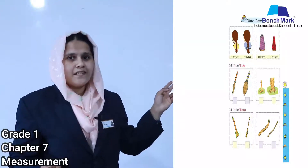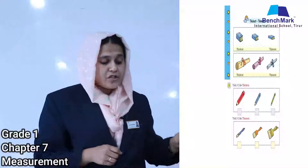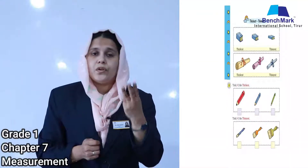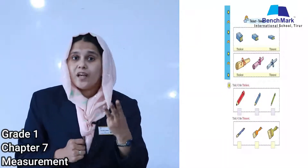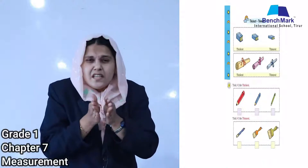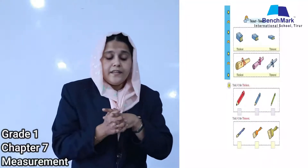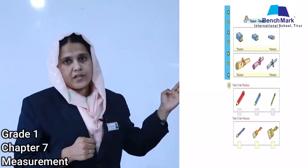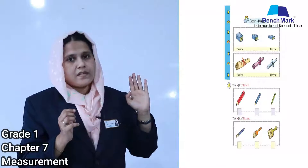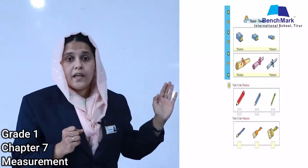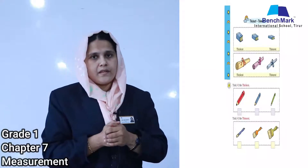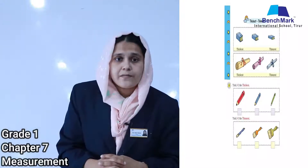Move to the next page, page number 98. When three objects are given — more than two — we use the superlative forms: thickest and thinnest. Tick the thickest pencil on page number 98 — compare the three pencils and tick the thickest one. The next question asks you to tick the thinnest brush.